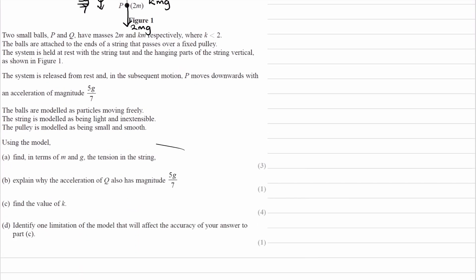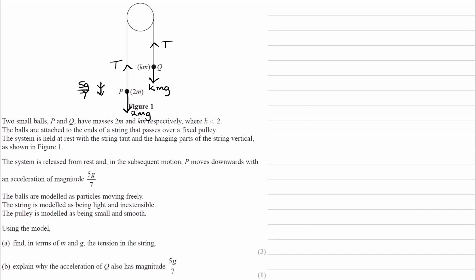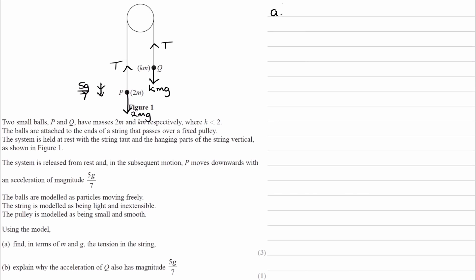And for the first part of the question, we're trying to find, in terms of m and g, the tension in the string. So let's set up our equations of motion for both particles. So for P, we know the acceleration is downwards, therefore the resultant force is downwards. 2mg must therefore be bigger than t. The overall downwards force will then be 2mg minus t. That's the resultant force. And if that's the resultant force, it's equal to ma. The m in this case is 2m. And the a is 5g over 7.